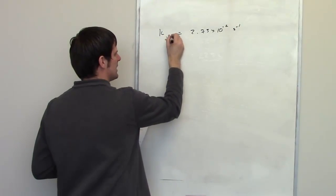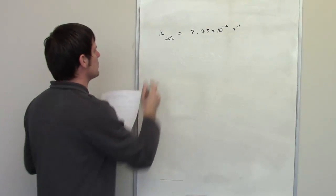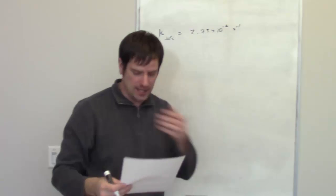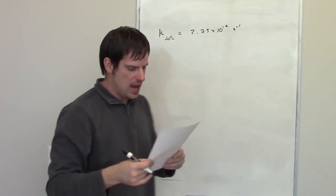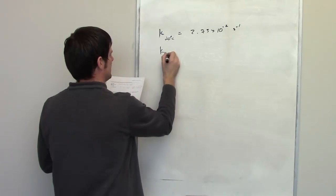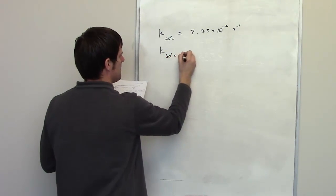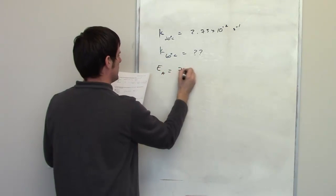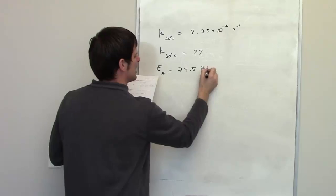So I'm going to write down 20 degrees C right here, just so that we know that this is the rate constant at 20 degrees C, and we don't get it mixed up with the rate constant at a different temperature. It then asks me what the rate constant would be at 60 degrees C if the activation energy for this is equal to 75.5 kJ per mole.